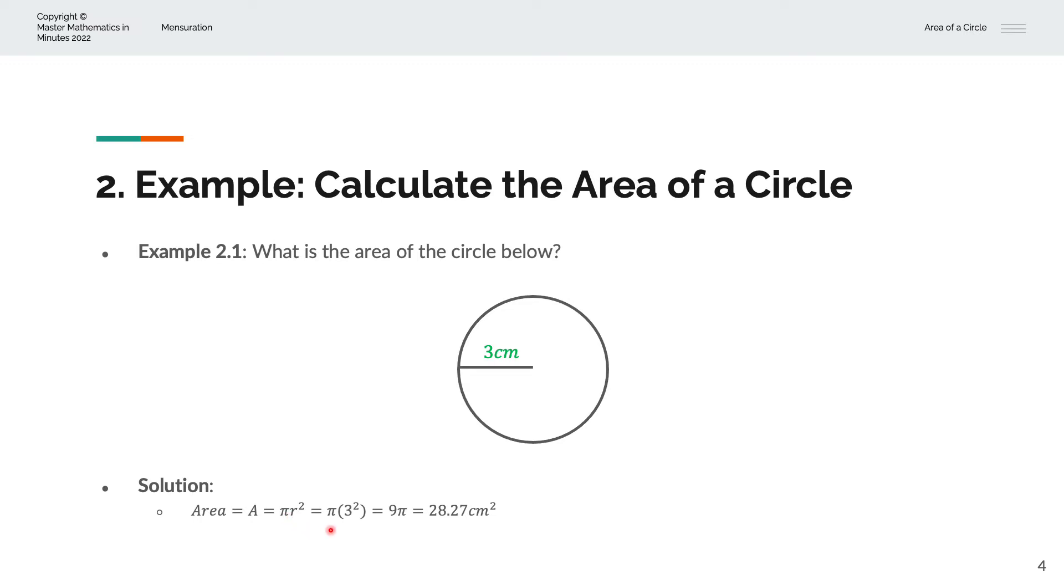And we'll copy the π over. And the radius is 3, so we'll replace r by 3 and we'll square that. And 3 squared becomes 9. So we have 9 times π, and that is 28.27 centimeters squared.